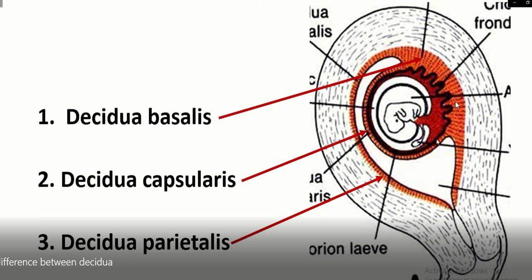This is the chorion. The chorion has two parts: this part is known as the chorionic frondosum, where chorionic villi are well developed. This other part of the chorion is smooth — there is a lack of chorionic villi, so it is the chorionic laeve. The chorionic frondosum forms the fetal part of the placenta, and the decidua basalis forms the maternal part of the placenta.